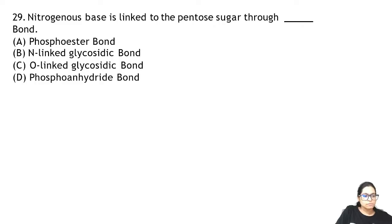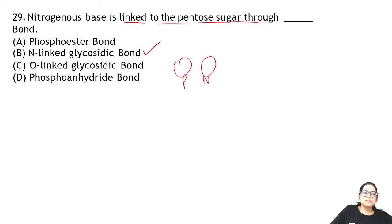Question 29: nitrogenous base is linked to the pentose sugar through — it is linked by an N-glycosidic bond. Question 30: the free phosphate group is present at which carbon end of pentose sugar? It will be present at the 5′ end.